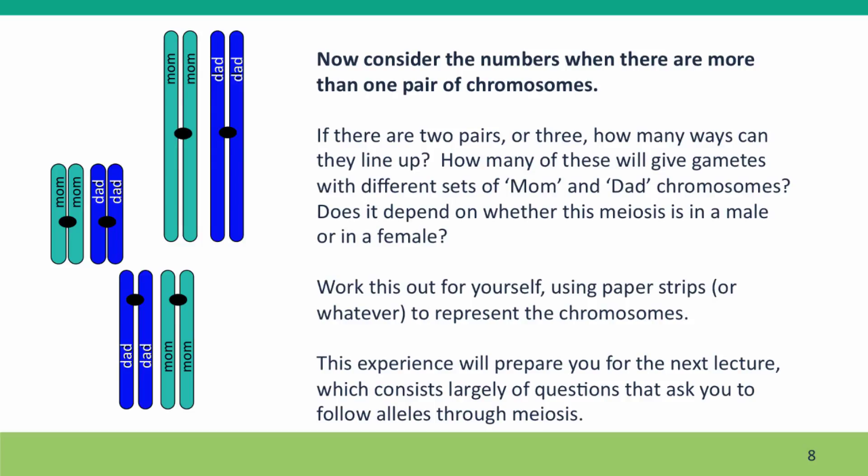Considering the numbers, if there's one pair of chromosomes, you might say, well, it doesn't matter. And in males, it doesn't matter. All of the chromosomes will wind up in the gametes. But if we're thinking about a female cell, then there are two outcomes. The mom chromosome could wind up in the oocyte, in the ovum, and the dad chromosome in the polar bodies, or vice versa. So if there's one chromosome, there are two possibilities.